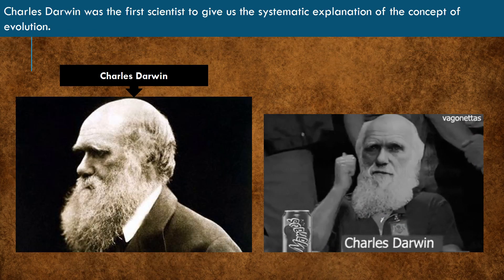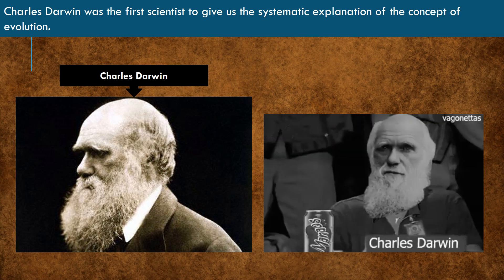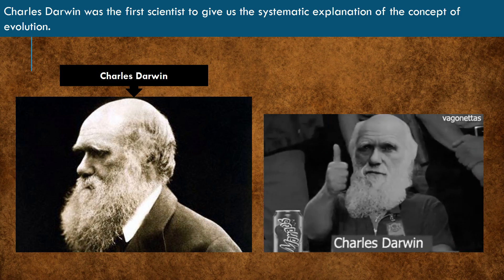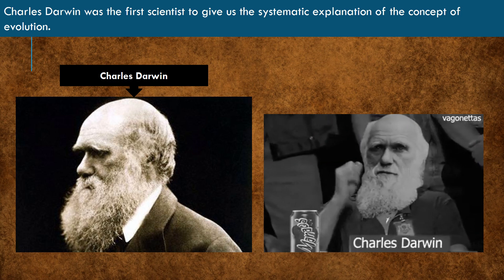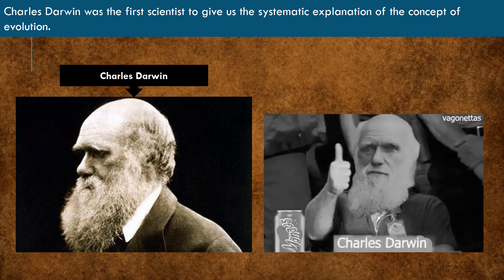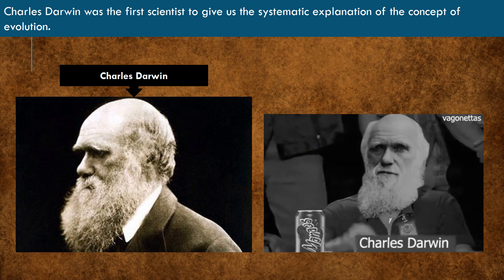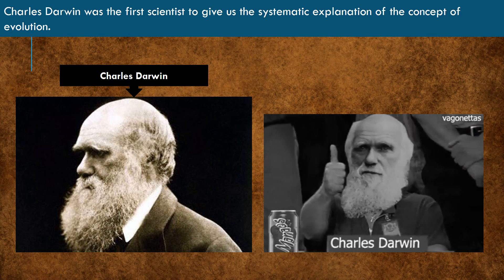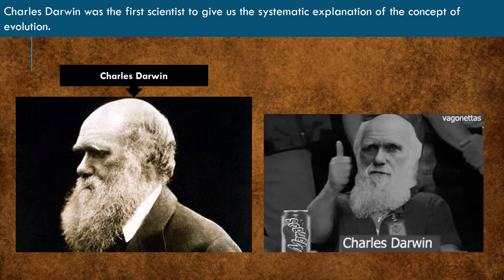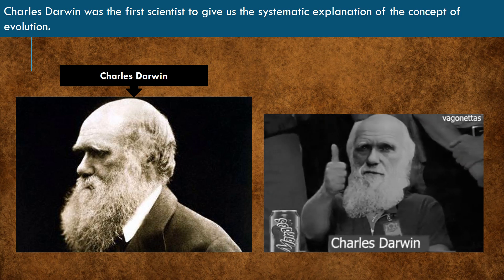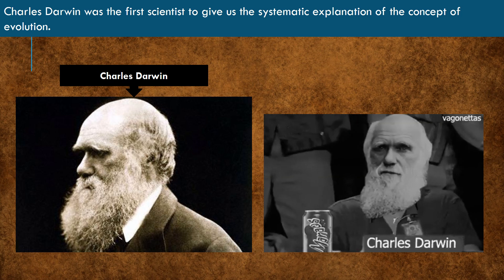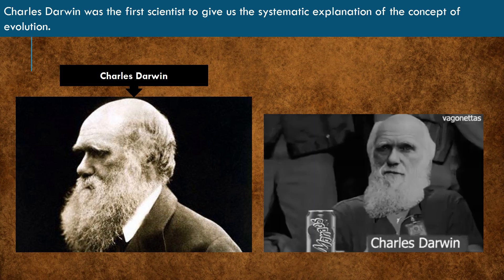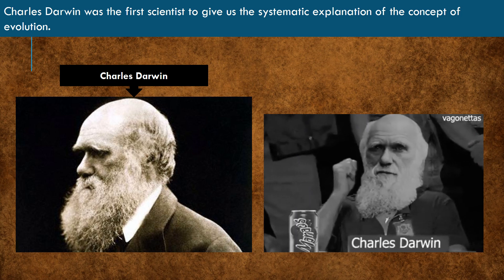Charles Robert Darwin was born on February 12, 1809 in England. He was a naturalist and biologist known for his theory of evolution and his understanding of the process of natural selection.